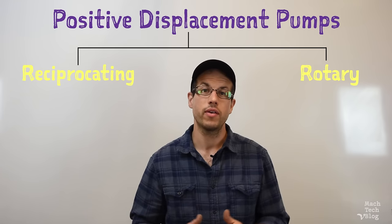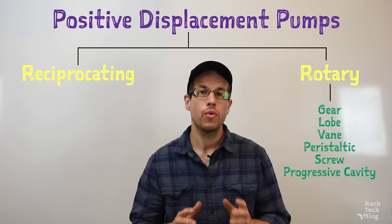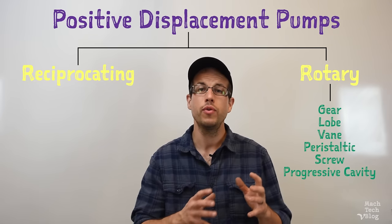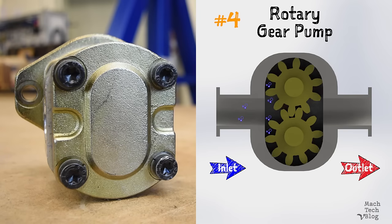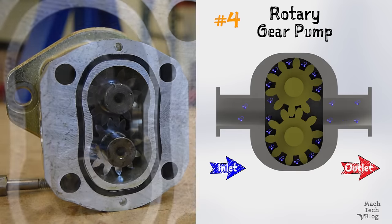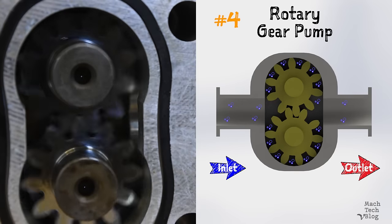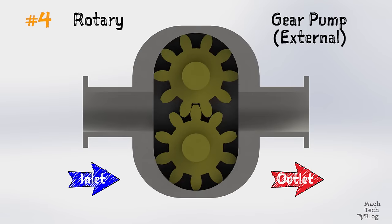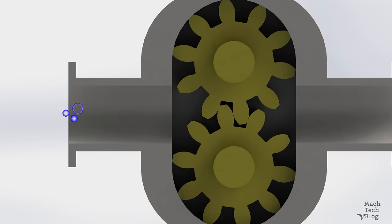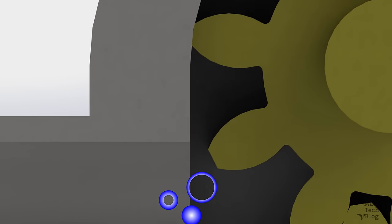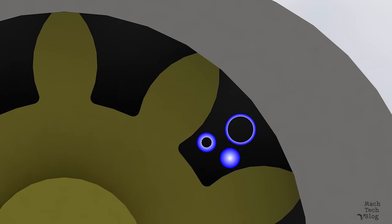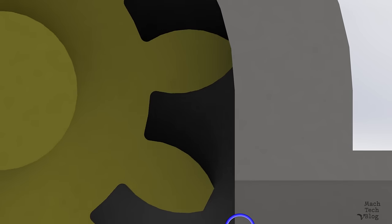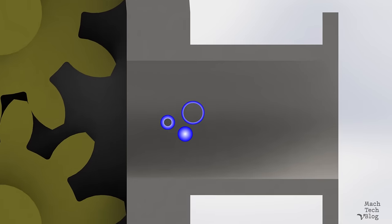The second category of positive displacement pump is the rotary pump. All rotary pumps utilize some kind of a moving chamber that traps fluid and carries it from one side of the pump to the other side. To illustrate this concept, let's look at pump number four: the gear pump. This configuration is more properly called an external gear pump. The mechanism consists of two rotating gears, one driving the other inside of an oval housing. At the suction inlet, fluid is trapped in a chamber between the gear teeth and the inside wall of the housing. The rotary motion moves the chamber from one side of the housing to the other, and as the gear teeth rotate back into mesh, the chamber is closed, forcing the fluid through the discharge outlet.